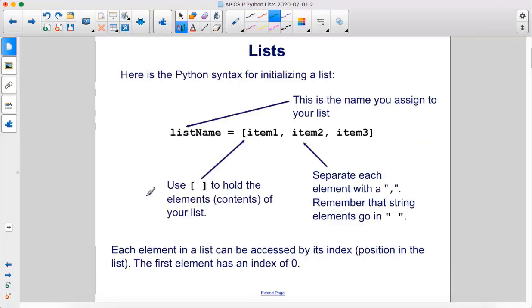Here is the Python syntax for initializing a list. This is the name you assign to your list, then an equal sign, and then square brackets to hold the elements or contents of your list. We separate each element with a comma. Remember that string elements are going to go inside of quotation marks.